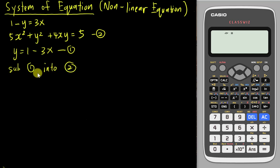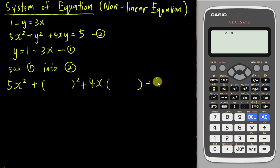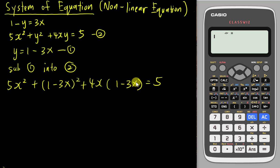So what I will substitute into is 5x² plus y² plus 4xy equals 5. Whenever I write y, I just leave it in brackets because I want to insert the other side of y, which is 1 minus 3x. The good thing about this calculator is it supports textbook display, so you can type exactly the same equation you see here and the calculator can understand what you want.